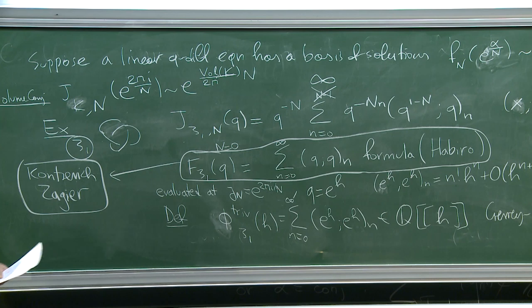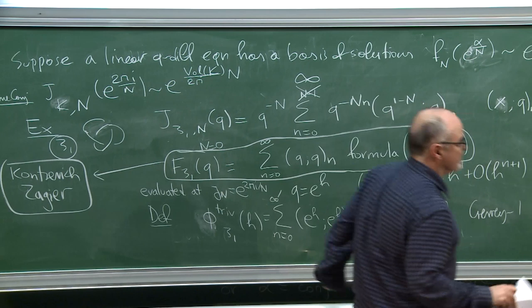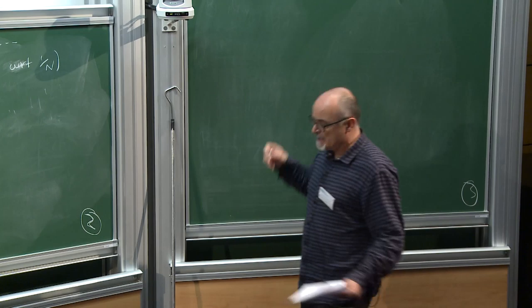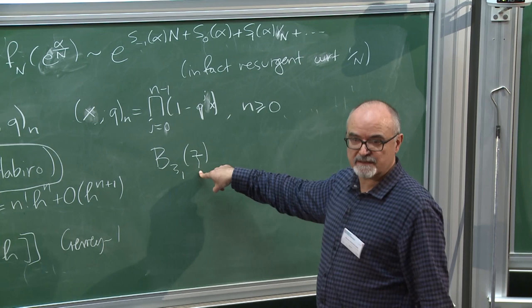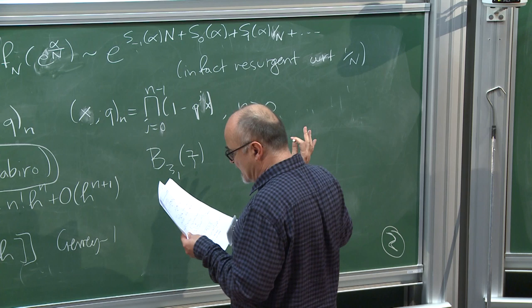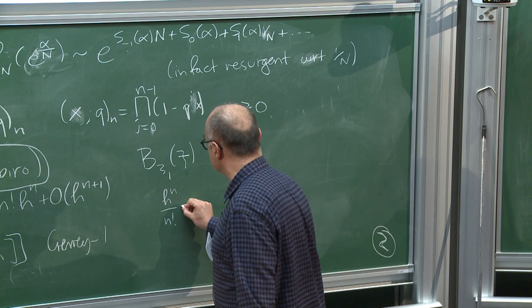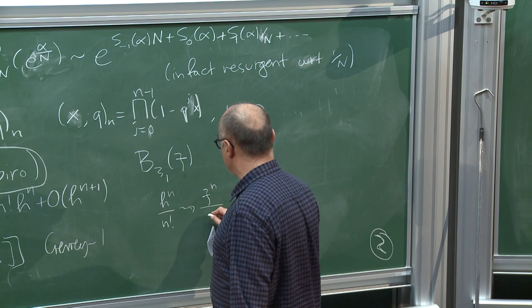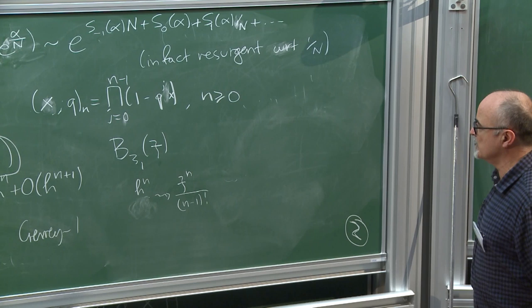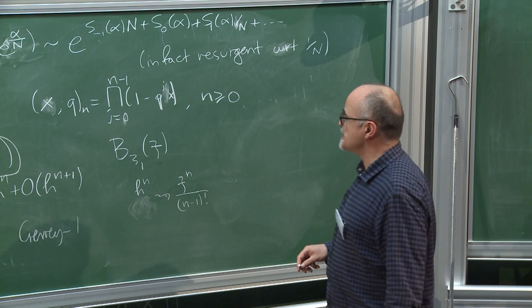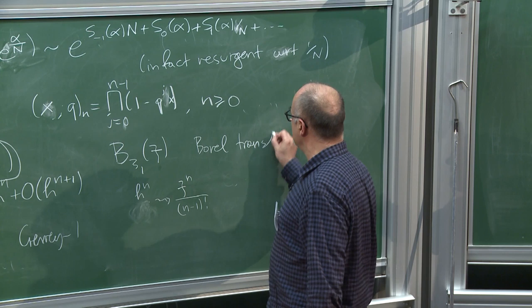The series is Gevrey-1. The theorem concerns the Borel transform — I write it as ξ (which looks like a 7, but that's the Greek letter). The Borel transform replaces h^n/n! by ξ^n/(n−1)!. This Borel transform is convergent for ξ near zero. The theorem, joint with Ovidio Costin, was my agenda 15 years ago and still is.